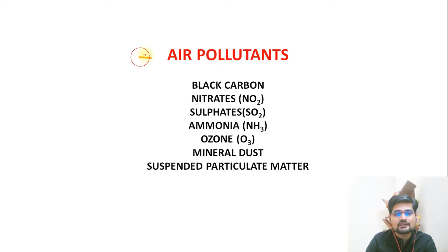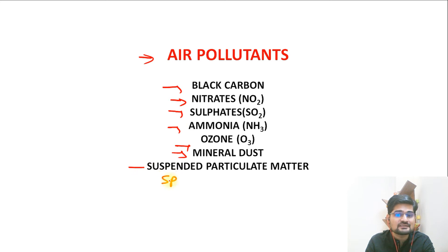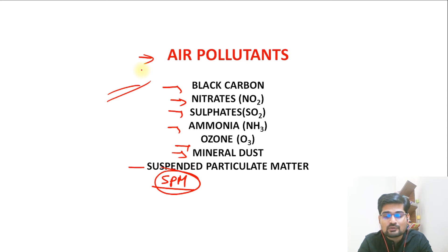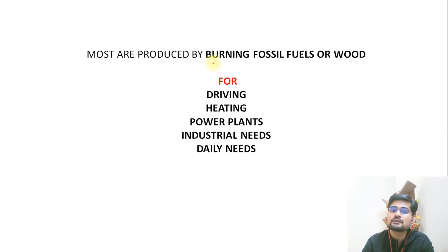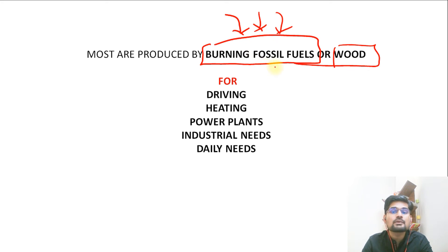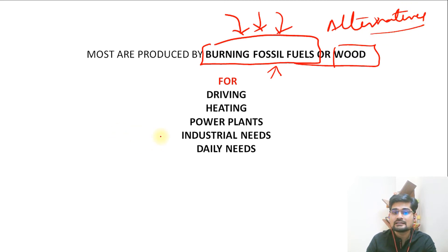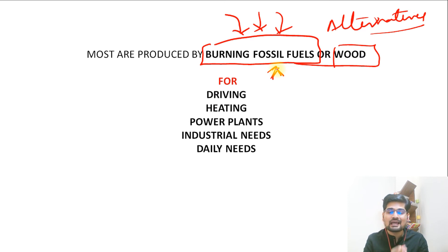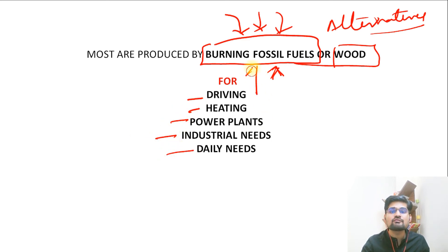This is the list of air pollutants we need to remember: black carbon, nitrates, sulfates, ammonia, ozone, mineral dust, and SPM. Most of this air pollution is produced by burning fossil fuels or wood-based fuel. This is where the climate change and anthropogenic concept comes in - stop burning fossil fuel, find alternatives like solar energy and wind turbines. Burning fossil fuel started to a maximum extent in the industrial revolution in the 18th and 19th century. For driving, heating, power plants, industrial needs, and daily needs, maximum fossil fuels are burned - this is the biggest contributor to air pollution.